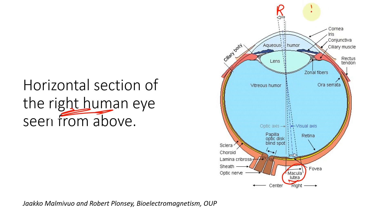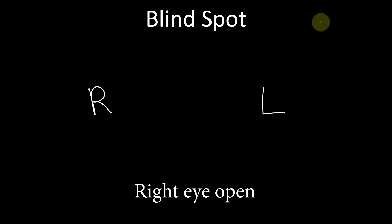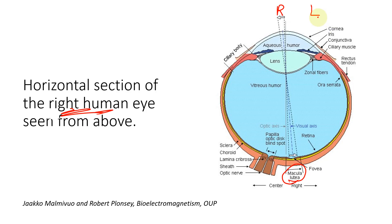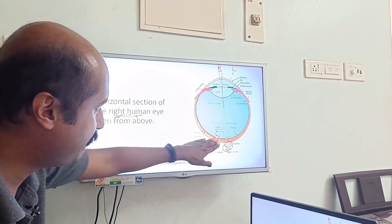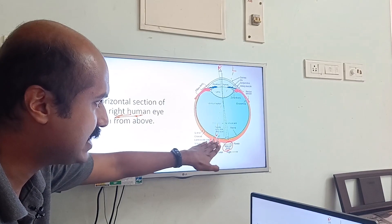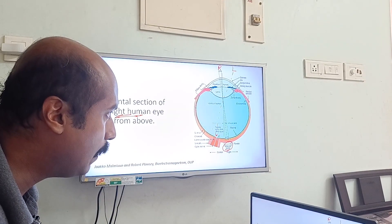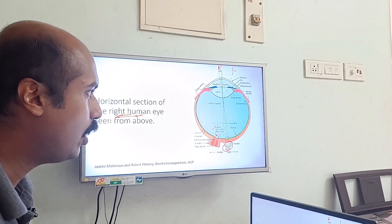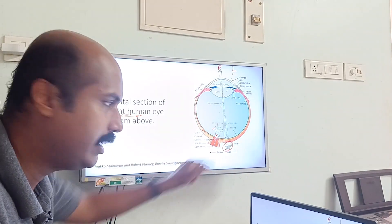When you are looking at R, on the temporal side of that field you have the letter L. When you close your left eye and with your right eye look at R, the L on the temporal side will be falling onto a region where the optic nerve is exiting. That region is called the optic disc, also called the optic nerve head.